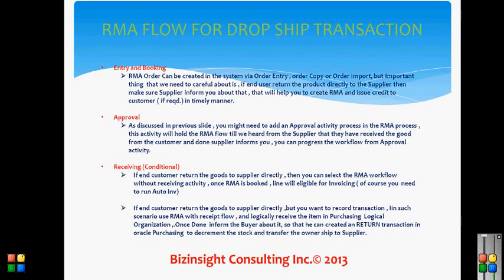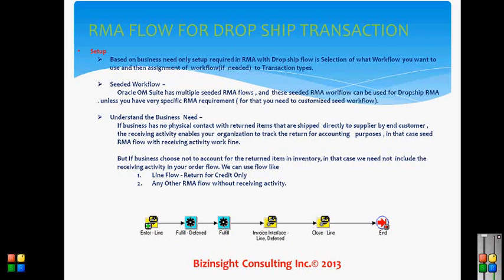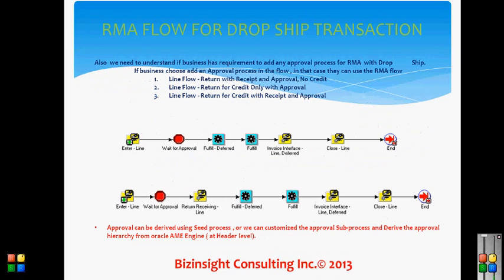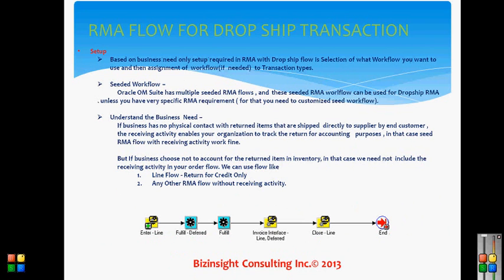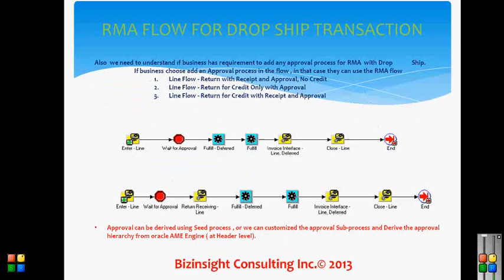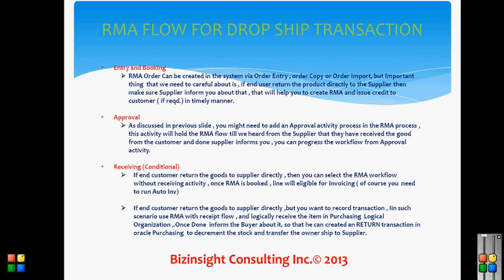The third thing is receiving. The RMA flow can have a receiving activity or be without one, based on your business need. If the end customer returns the goods directly to the supplier, you can select the RMA workflow without a receiving activity. Once the RMA is booked, the line will be eligible for invoicing — you just need to run auto invoice. As you can see in this workflow, once you enter and book the line, it goes directly to invoicing.